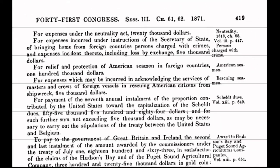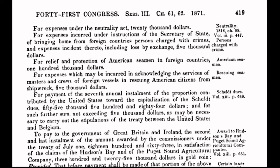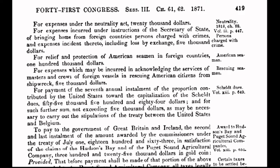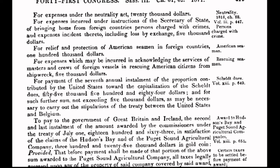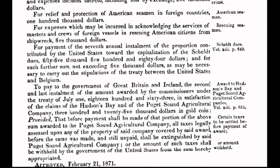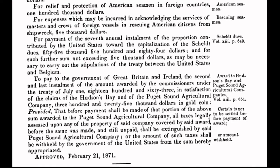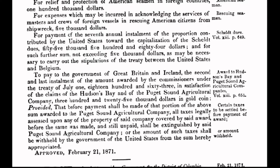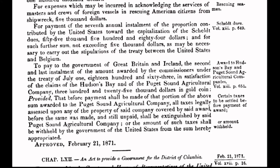In today's program, I will put the spotlight on an act that was enacted in the year of 1871 on February 21st. Congress passes an act to provide a government for the District of Columbia, also known as the Act of 1871. When you fully understand the ramifications of the past, you will then fully understand the ramifications of the present, and you will know how to change the future. And here is where our story begins.